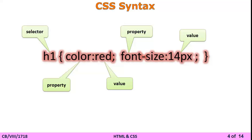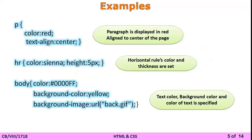Here we are using two properties: color and font-size. The value of color is red and the value of font-size is given in pixels. Examples are given to apply CSS on the paragraph — the paragraph is displayed in red aligned to center. For the hr (horizontal rule) tag, color and height properties set the color and thickness of the horizontal rule.